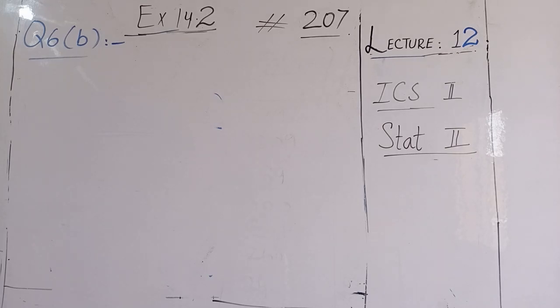Assalamualaikum dear students. Exercise 14.2, page number 207, question number 6, part B start. Part A we don't do. The following data shows the marks in economics and marks in statistics obtained by 10 students. What do we find?